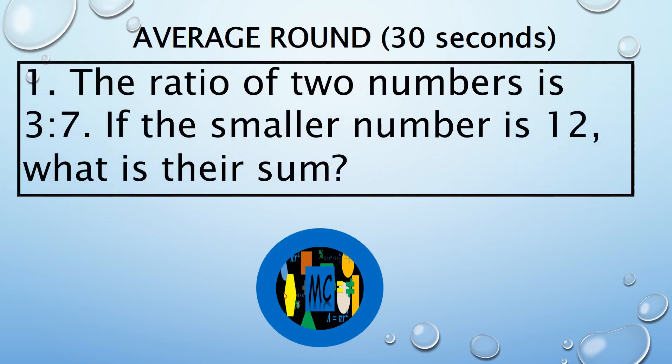The ratio of two numbers is 3 is to 7. If the smaller number is 12, what is their sum?